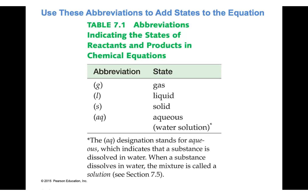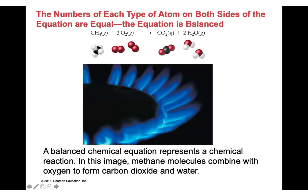Here you see a chemical equation — this is a combustion reaction. Methane gas (you see the small 'g' in parentheses indicating the state is gas) reacts with oxygen to give us carbon dioxide and water. In a combustion reaction, the products are always carbon dioxide and water.